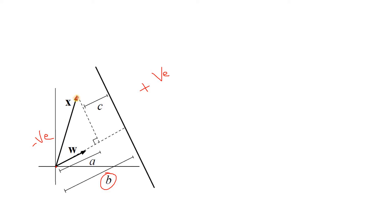Now I am considering any random point — suppose this point is A. We want to calculate the distance between this particular arbitrary point A and this linear classifier, or linear separator, or hyperplane, which is basically C.